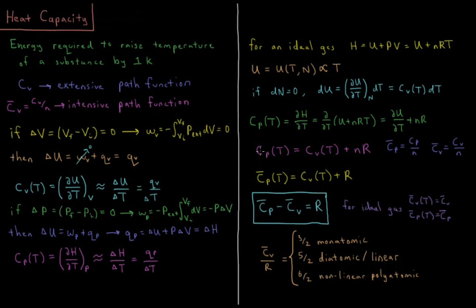So for an ideal gas, the constant pressure heat capacity Cp(T) equals the constant volume heat capacity Cv(T) plus the number of moles N times the gas constant R.